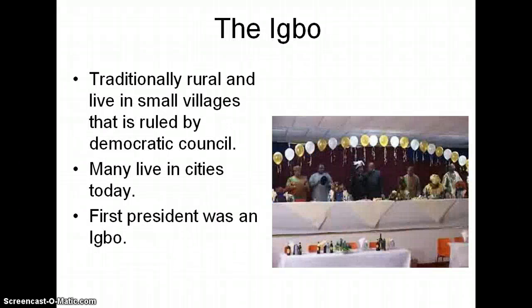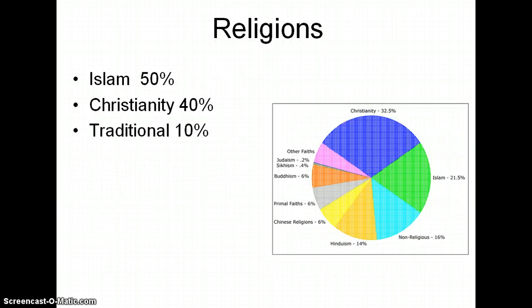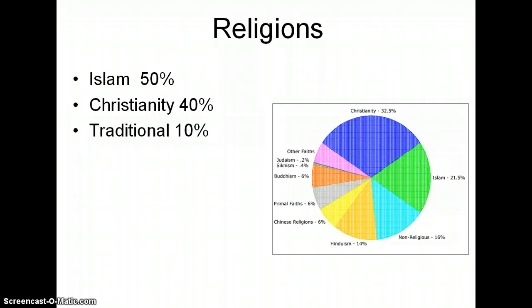Now, the Igbo — they're traditionally rural and live in small villages that are ruled by democratic councils. Many live in cities today, and the first president of Nigeria was an Igbo. In terms of religion, about 50% of the population is Muslim and practices the faith of Islam. About 40% are Christian, and about 10% are traditional, which means they practice an animistic faith that generally looks at nature, deities, and things like that.